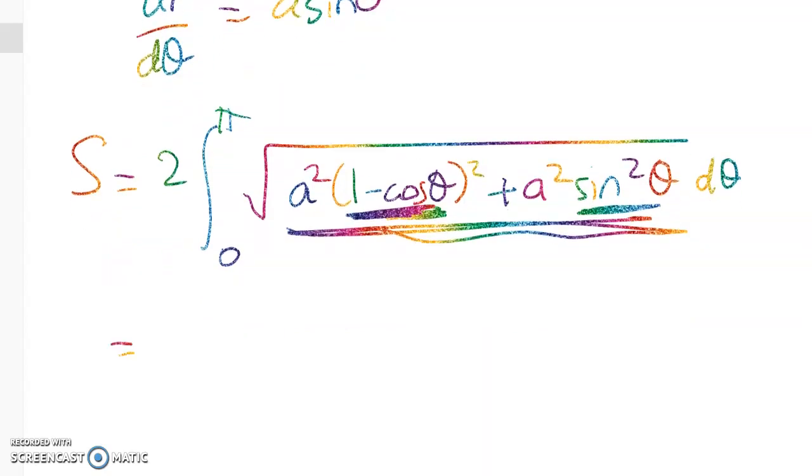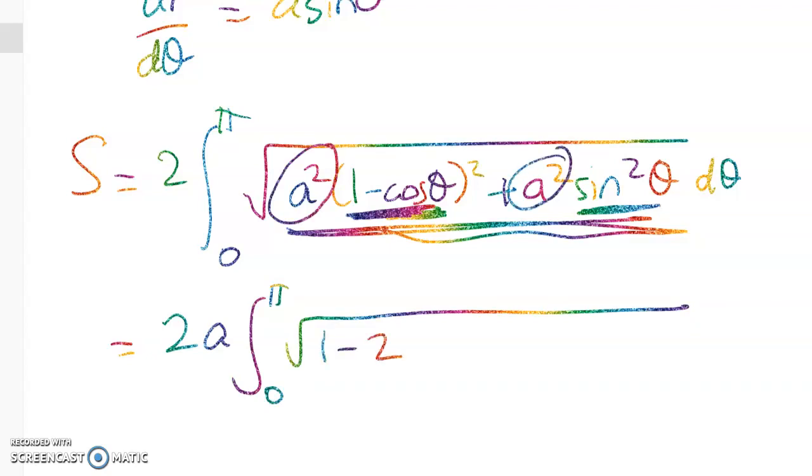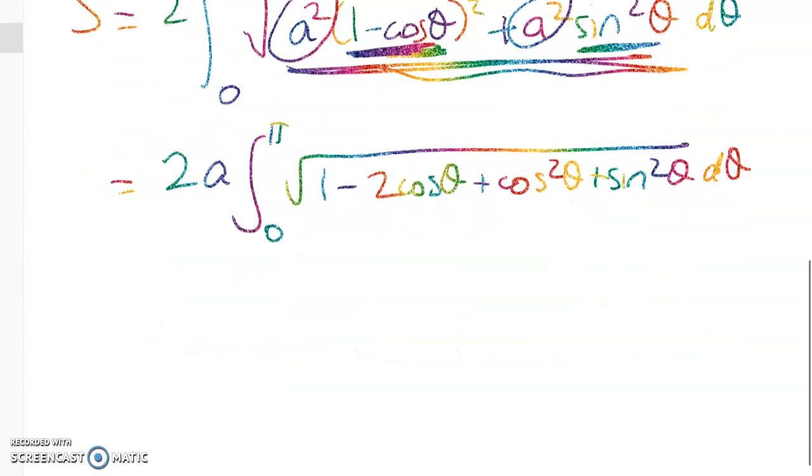So what will I do first? Well I'm going to take out the common factor of a. So we'll have 2a from 0 to π of, now I can do that because I've got the a² here and here, 1 - 2cosθ + cos²θ + sin²θ dθ which gives me 2a times this integral.